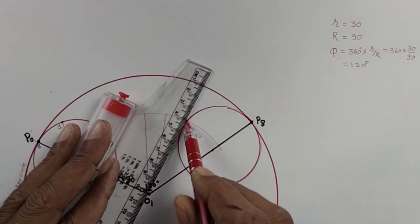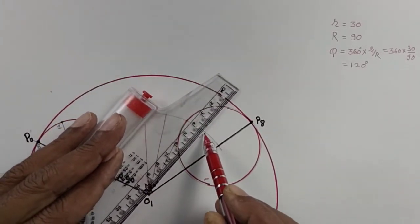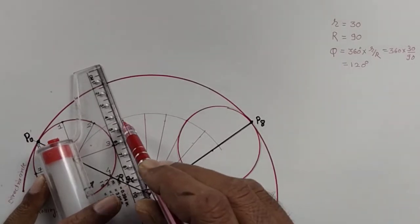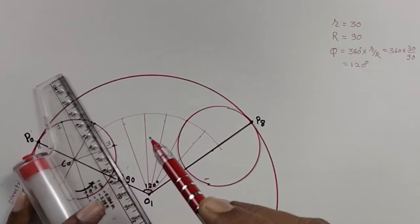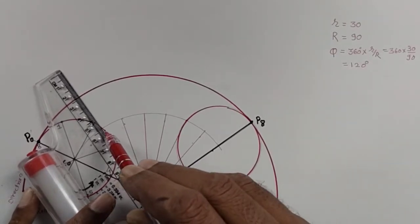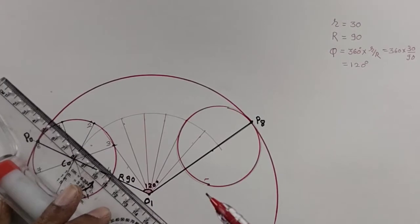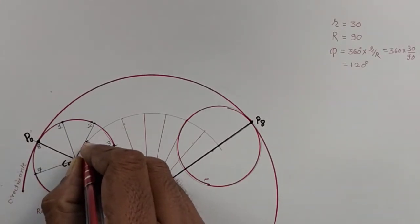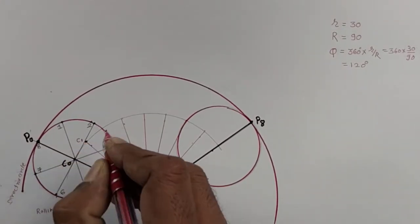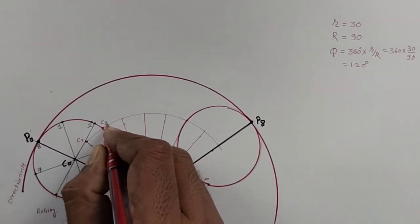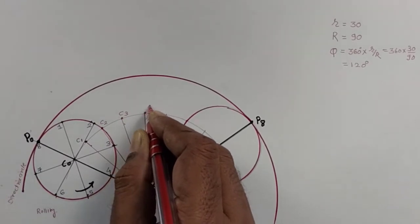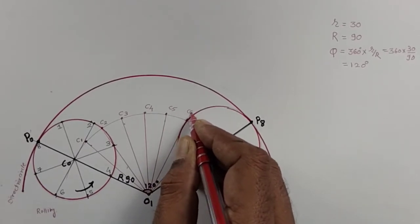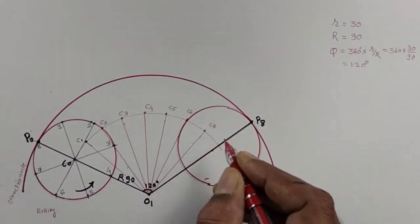This gives all the different positions of all the points. There are four divisions on the right-hand side. Similarly, you have four divisions on the left-hand side where you can mark your centers: C1, C2, C3, C4, C5, C6, C7, and C8.